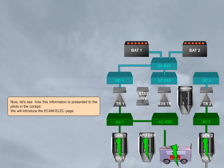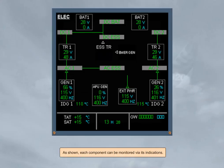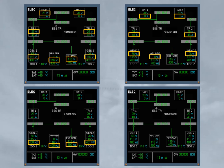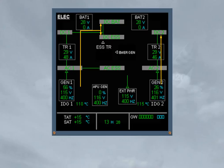Now let's see how this information is presented to the pilots in the cockpit. We will introduce the ECAM electrical page. You can see that most of the components we have talked about are displayed on the ECAM page. Note that the static inverter indication will replace the external power indication only during its test, provided the essential buses are supplied by the batteries. Each component can be monitored via its indications: voltage, current or load for the generators, frequency, and IDG temperature. You can also notice the different connections displayed via green lines.